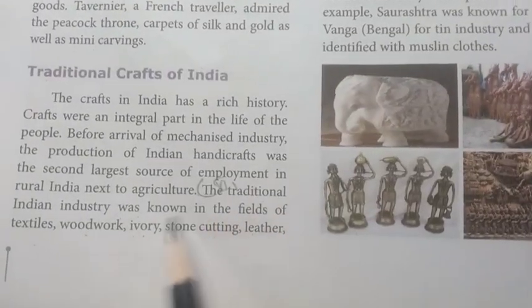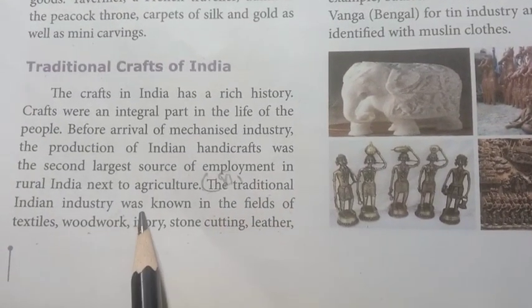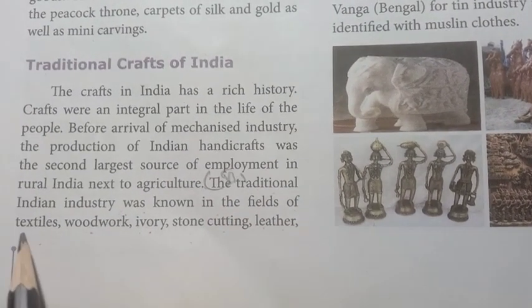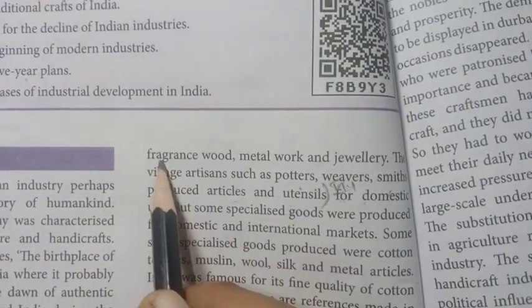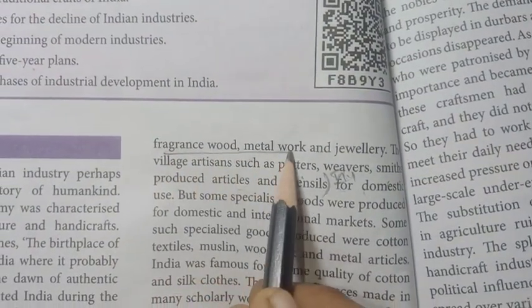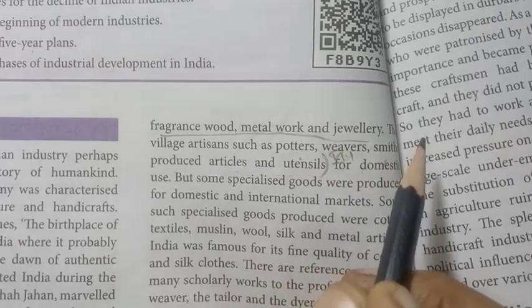So, traditional Indian industry was known in the fields of textile, woodwork, ivory, stone cutting, leather, fragrance wood, metalwork, and jewellery.